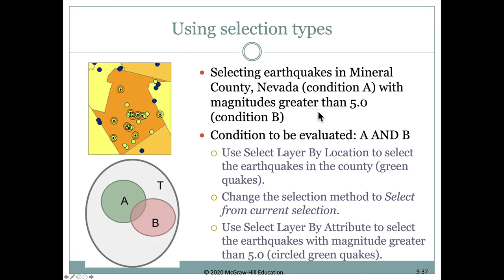Let's look at an example: selecting earthquakes in Mineral County, Nevada with a magnitude greater than 5.0. We first select all earthquakes within Mineral County, Nevada — that selects all of these. Then, this is where the AND comes in: we select from the current selection and go into the attribute table to select earthquakes with a magnitude greater than 5.0 from what was already selected. Once done, it no longer selects all of them — just the ones with magnitude greater than 5.0.